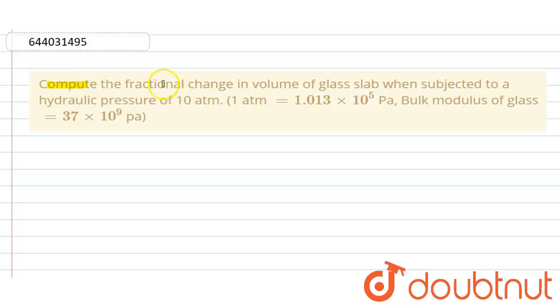Compute the fractional change in volume of a glass slab when subjected to a hydraulic pressure of 10 atm. 1 atm equals 1.013 × 10^5 Pascal. Bulk modulus of glass equals 37 × 10^9 Pascal.